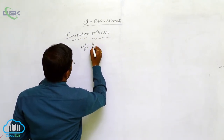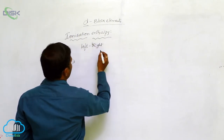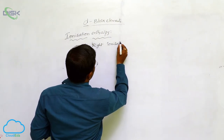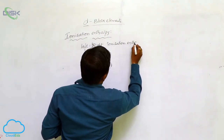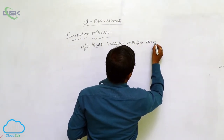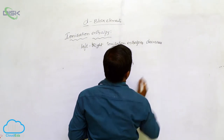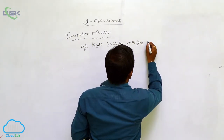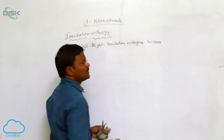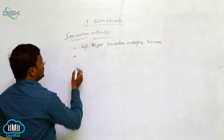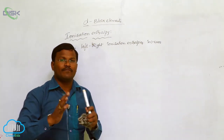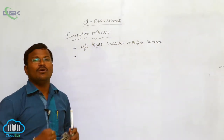As a general concept, ionization enthalpy increases from left to right due to decrease in atomic size. However, transition elements show slightly varying ionization enthalpy values from one element to another element.